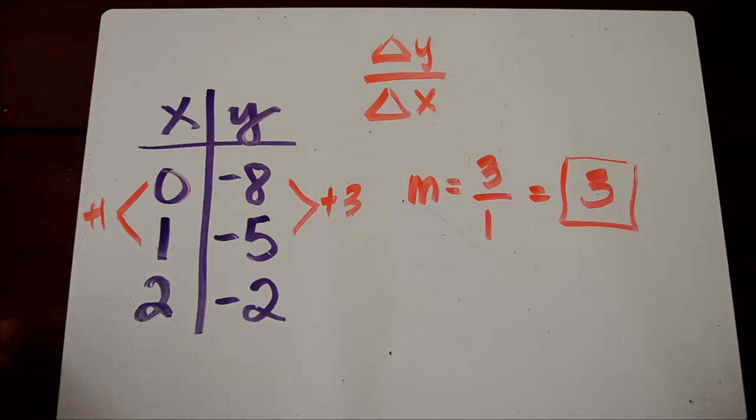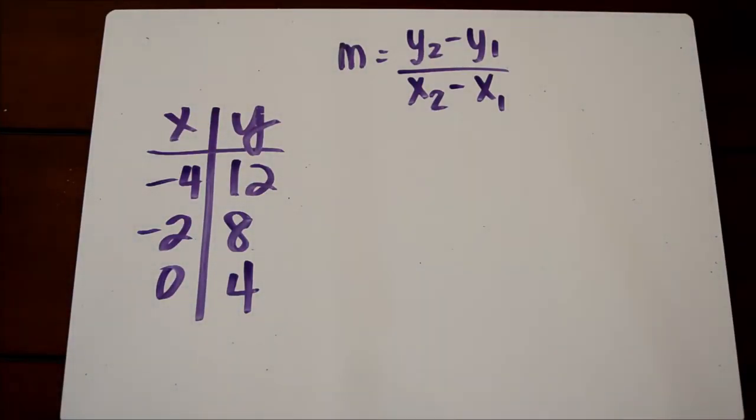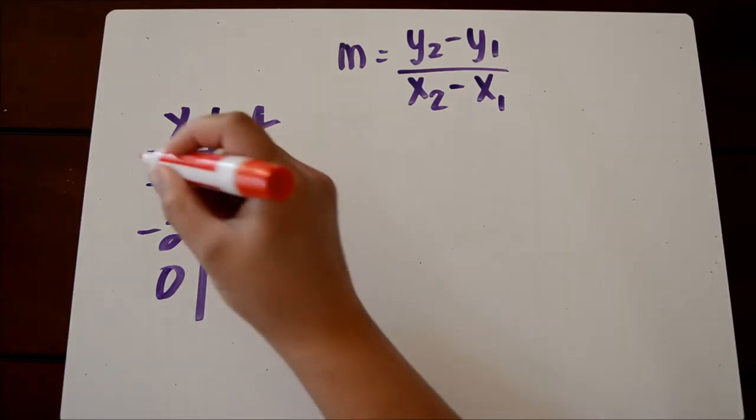Let's take a look at another example, except this time we're going to use the slope formula. The slope formula means the same thing as delta y over delta x.